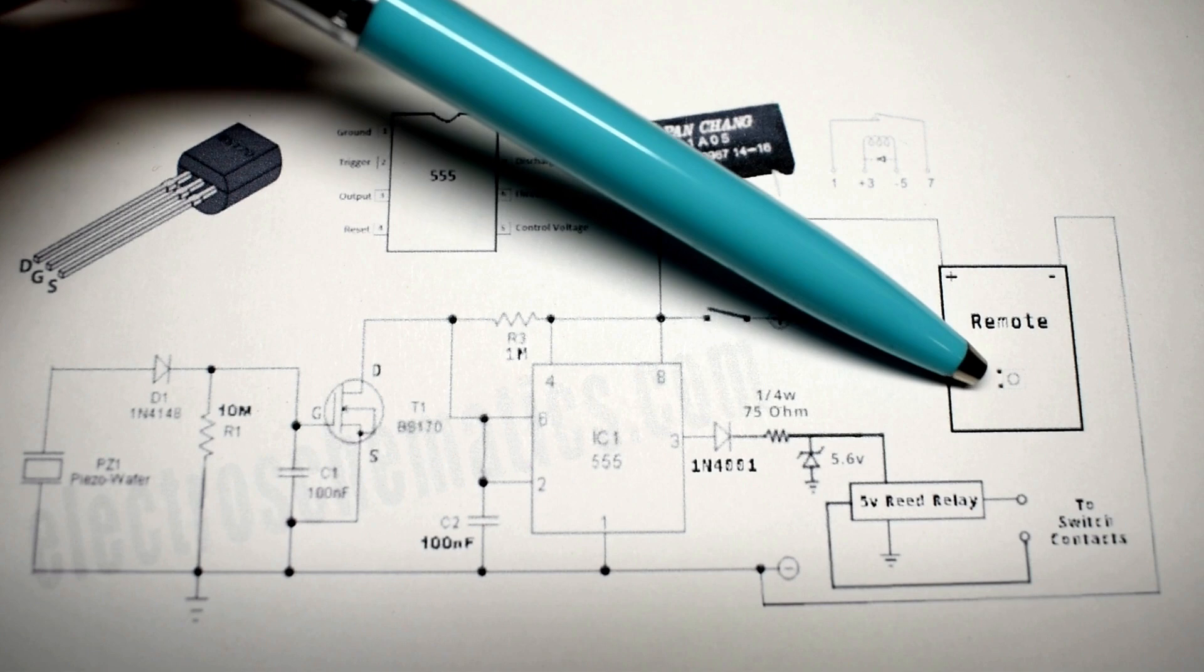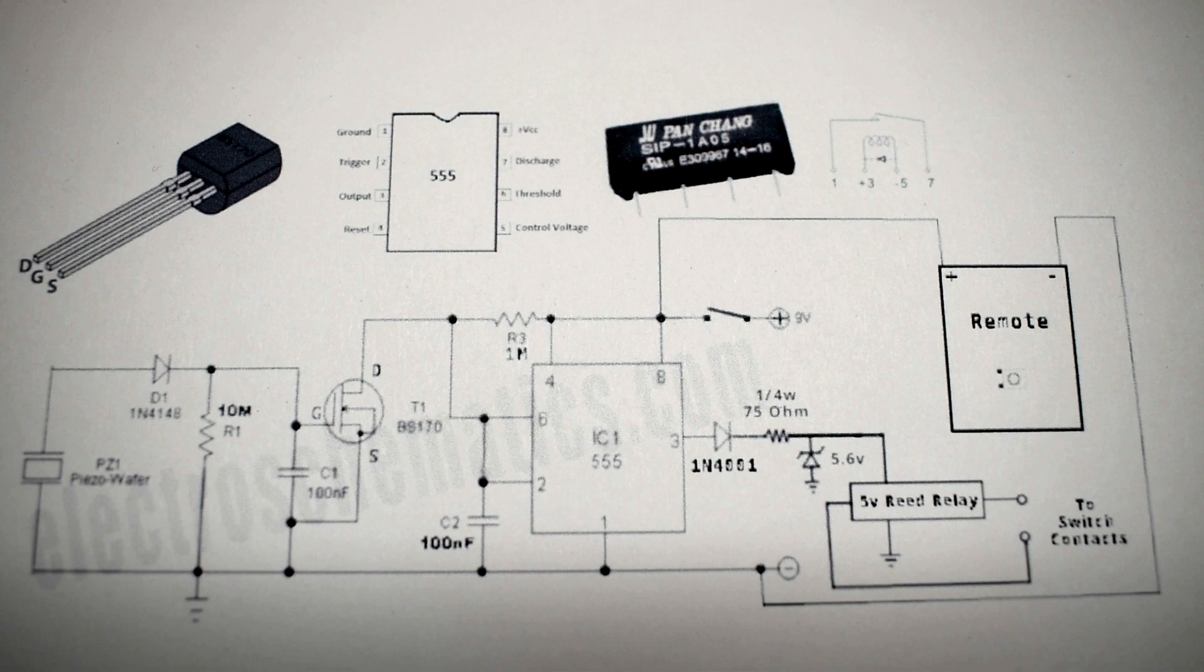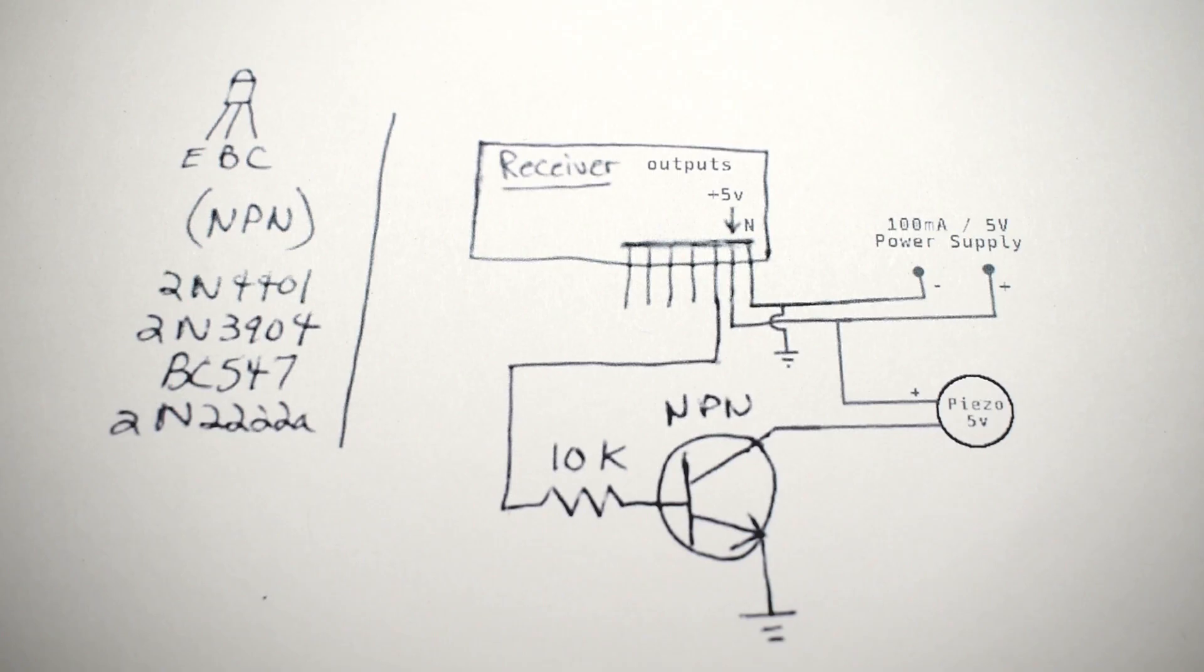When the relay is triggered, you're going to have the normally open contacts for that relay connected across the switch on the remote control for the correct A, B, C, or D that you're using. It's going to act like you're pushing the button, but the circuit is doing it for you through the relay.